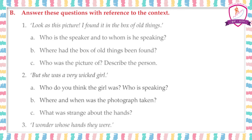The next question in the reference to context is: where had the box of old things been found? The box of old things had been found in the attic. The attic is a room where things that are passed down from generations are kept. So the box of old things had been found in the attic.